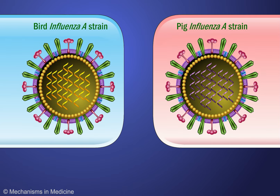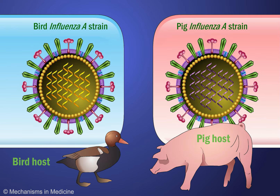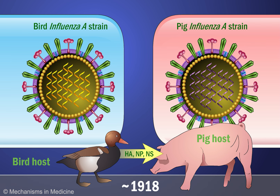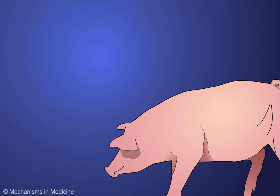Antigenic shift occurs when the influenza virus goes through major antigenic changes as a result of the reassortment of genomes among different strains, including animals. Origins of the hemagglutinin, nucleoprotein, and non-structural gene segments of the H1N1 virus are linked to avian flu virus which infected pig populations around 1918. Let's review the principles of antigenic shift.